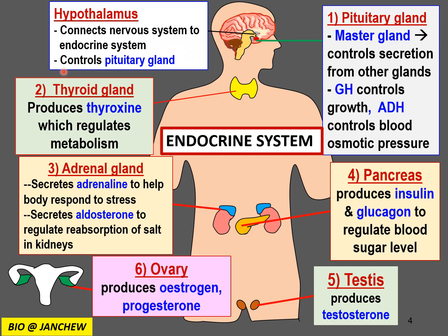Here's an overview of what we are going to study. The hypothalamus is part of the brain close to the pituitary gland; it connects the nervous system to the endocrine system and controls the pituitary gland. The pituitary gland is the master gland, which controls the secretion from other glands. It produces GH (growth hormone), which controls growth of bones and tissues, and ADH (anti-diuretic hormone), which controls the water and salt balance in the body.